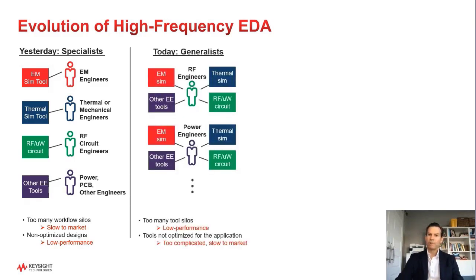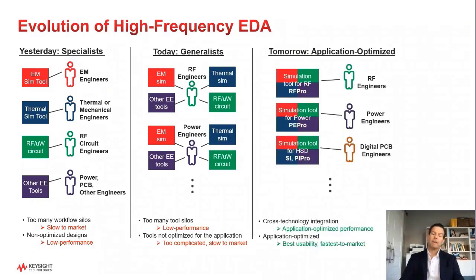As a result, we've seen the emergence of engineers who run multiple tools. RF engineers have learned how to use EM and thermal tools. Power engineers are needing to become EM experts, because high edge rates on switching power supplies is causing circuits to blow up. High-speed digital engineers are becoming experts at signal integrity and power integrity. These engineers can create more optimized designs, but only if they become experts in all of these different domains and learn how to use all of these different tools, which were designed for specialists.